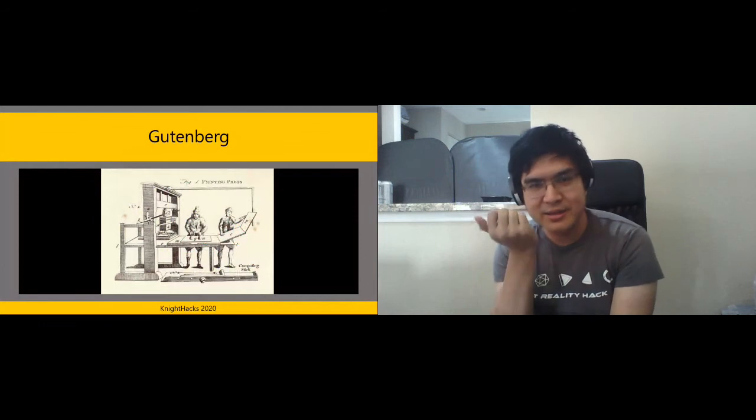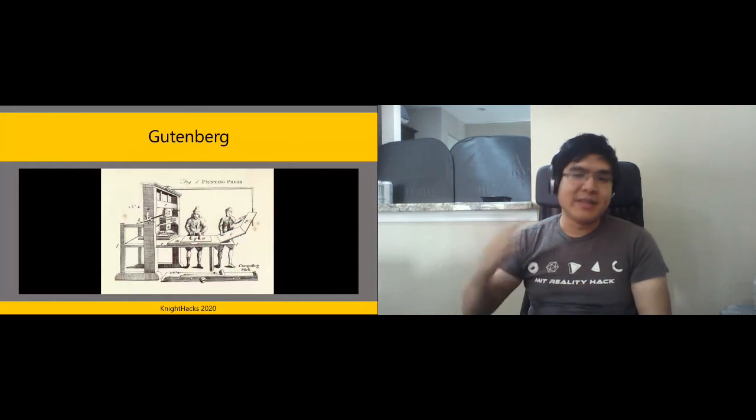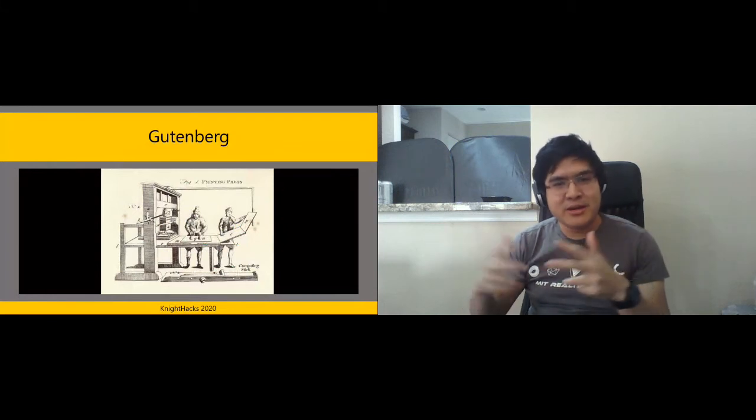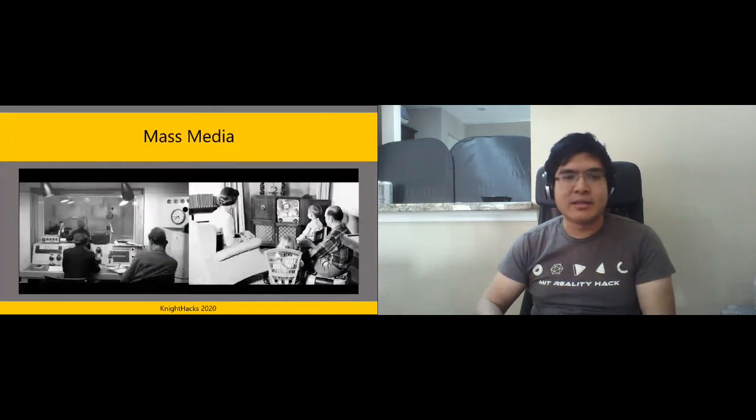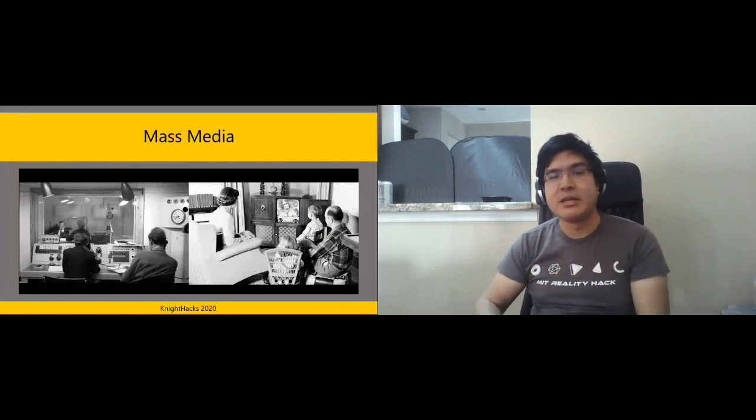As further advancements in communication happened, the printing press led to newspapers — our first form of mass communication, where we can disseminate information on a large scale to a lot of people. But this takes time. We also developed telephones, giving us immediate point-to-point communication where someone on the other side of the country gets information instantaneously. Then we combine those two ideas with radio and television: the mass impact of newspapers combined with the immediacy of telephones, where someone can say something to everyone immediately.